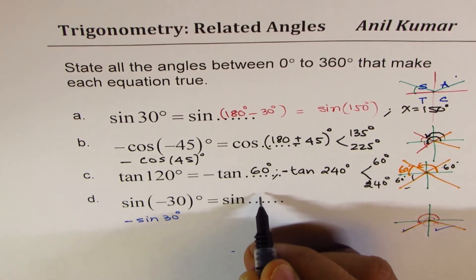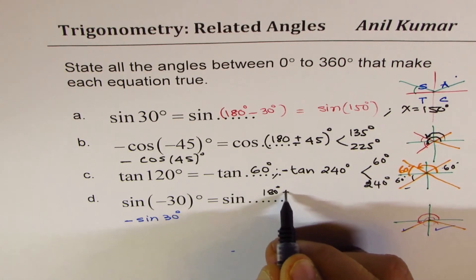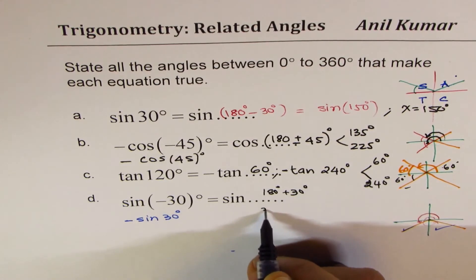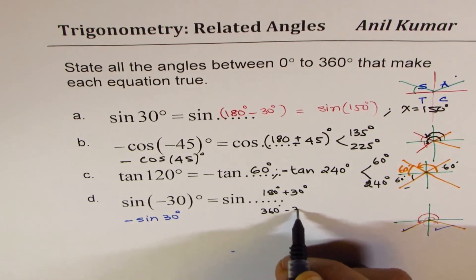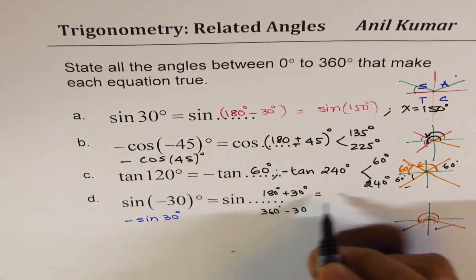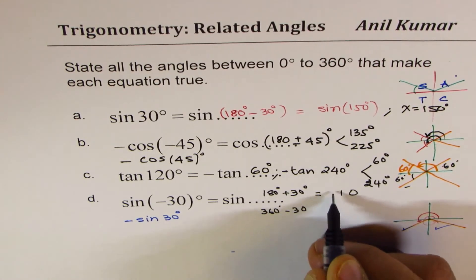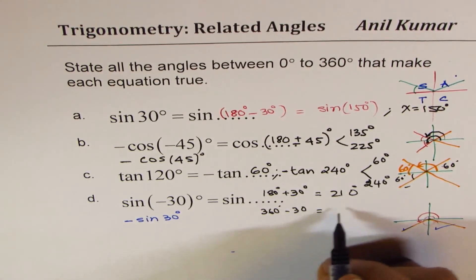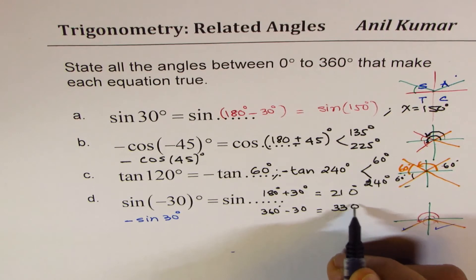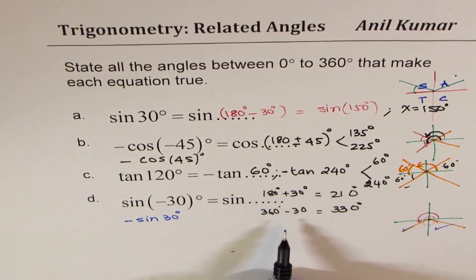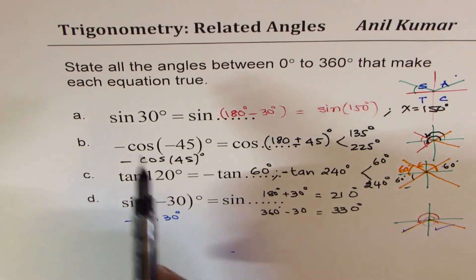And the angles are 180 plus 30 and 360 minus 30. So these angles are 180 degrees plus 30 degrees and 360 degrees minus 30 degrees. So that will give you 210 degrees and 330 degrees. So that is how we can find all the angles.